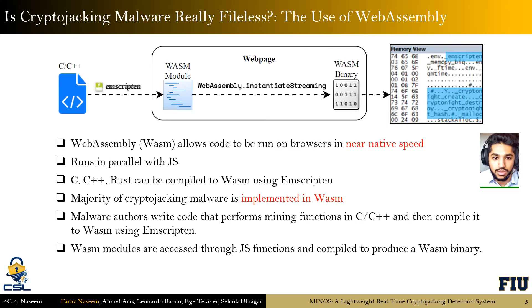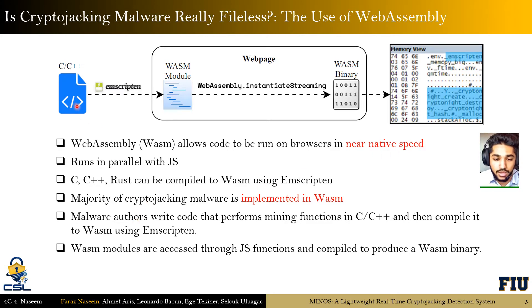Is cryptojacking malware really fileless? To answer that question we have to talk about WebAssembly. WebAssembly is a binary low-level instruction format that allows code to be run on browsers at near-native speed. It runs in parallel with JavaScript and is not meant to replace it. It is the compilation target of high-level languages such as C, C++, and Rust using the Emscripten toolchain. The majority of cryptojacking malware is implemented in WebAssembly due to its near-native speed advantage, so malware authors write code in C or C++ that performs mining functions and use the Emscripten toolchain to convert this code into a WebAssembly module.